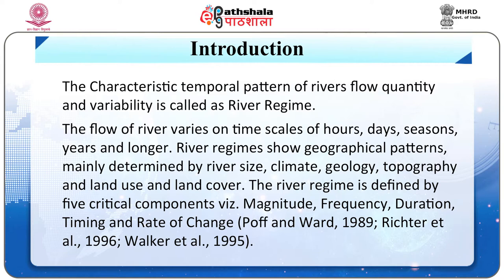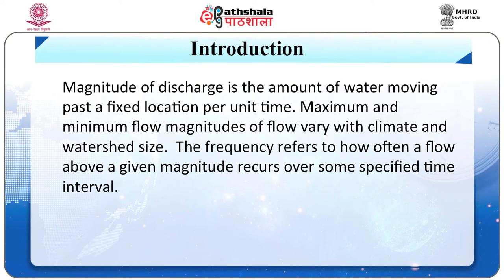The flow of a river varies on time scales of hours, days, seasons, years, and longer. River regimes show geographical patterns mainly determined by river size, climate, geology, topography, and land use/land cover. The river regime is defined by five critical components: magnitude, frequency, duration, timing, and rate of change.